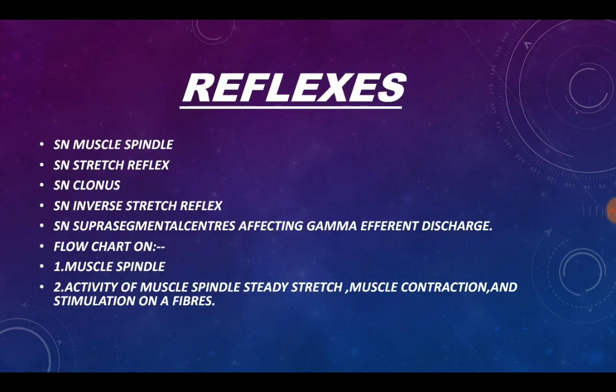Moving on to the chapter on reflexes. The various questions asked are: short note on muscle spindle and stretch reflex — these two are important. Clonus is not that important. Inverse stretch reflex is again very important. Supra-segmental centers affecting gamma efferent discharge is also very important. Flow chart on muscle spindle, activity of muscle spindle during stretch, muscle contraction, and stimulation of alpha fiber can also be asked.